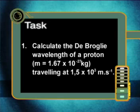Isn't it amazing that the strange idea of wave-particle duality has had such a huge impact on technology and on our ideas about the atom? Now, for your task for today, I want you to solve the following problems. Calculate the de Broglie wavelength of a proton with a mass of 1.67 times 10 to the minus 27 kilograms, traveling at 1.5 times 10 to the 3 meters per second.